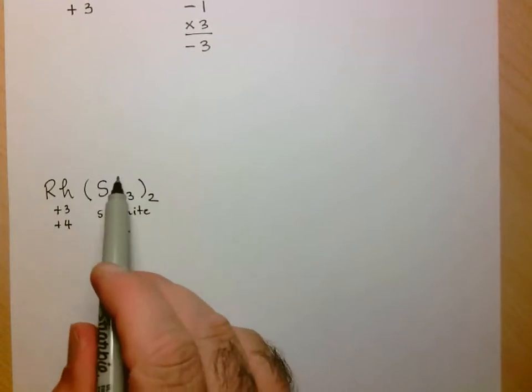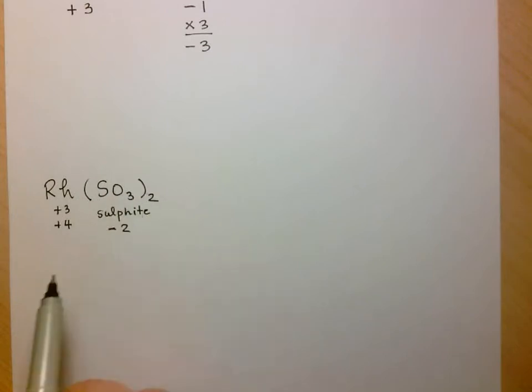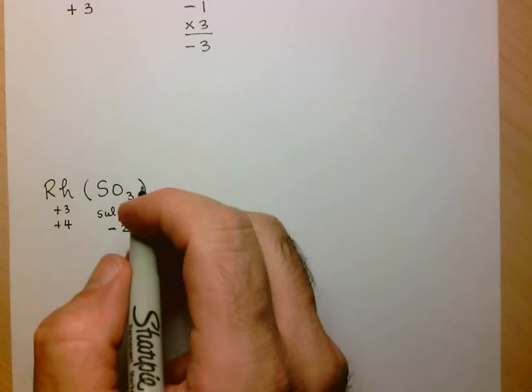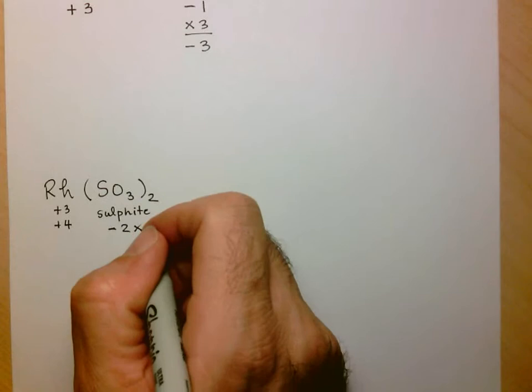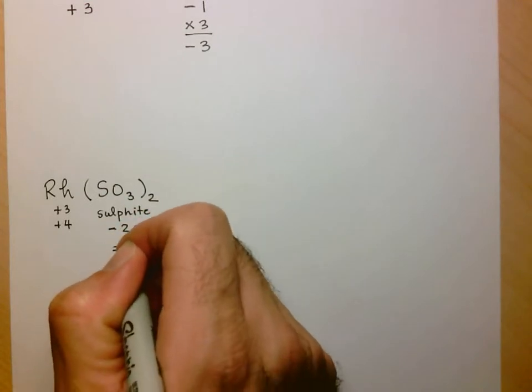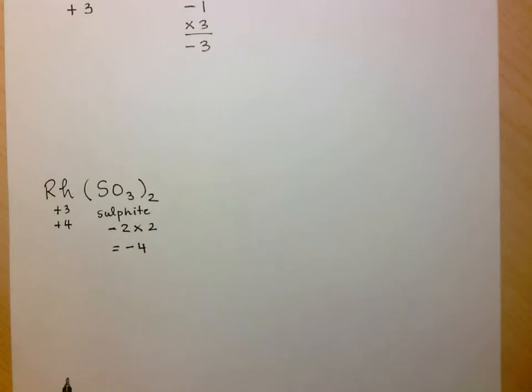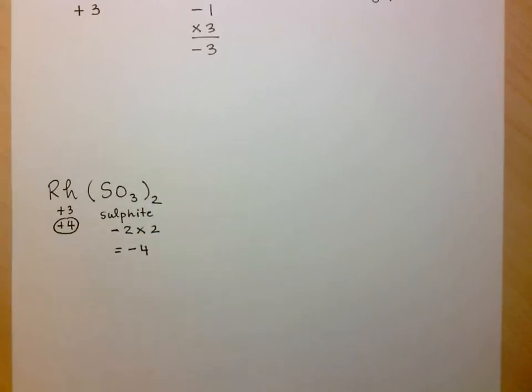But here, this 2 outside of the bracket tells me that I've got 2 of these polyatomic ions. That means that the total charge, I must find by multiplying this negative 2 by 2, since there's 2 of these ions. So my total charge is minus 4. So from my anion, the total charge is minus 4. I only have one rhodium ion, so in order to balance things out, I'm going to have to use rhodium 4.